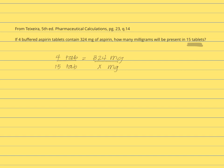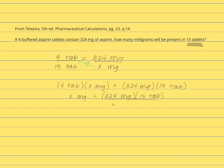Let's first cross-multiply. Cross-multiplying will make our new equation look like this: four tabs times x milligrams equals 324 milligrams times 15 tablets. We can solve for x — the four tablets will move to the other side. The key to this is being able to cancel our units, so now we can cancel out tabs.